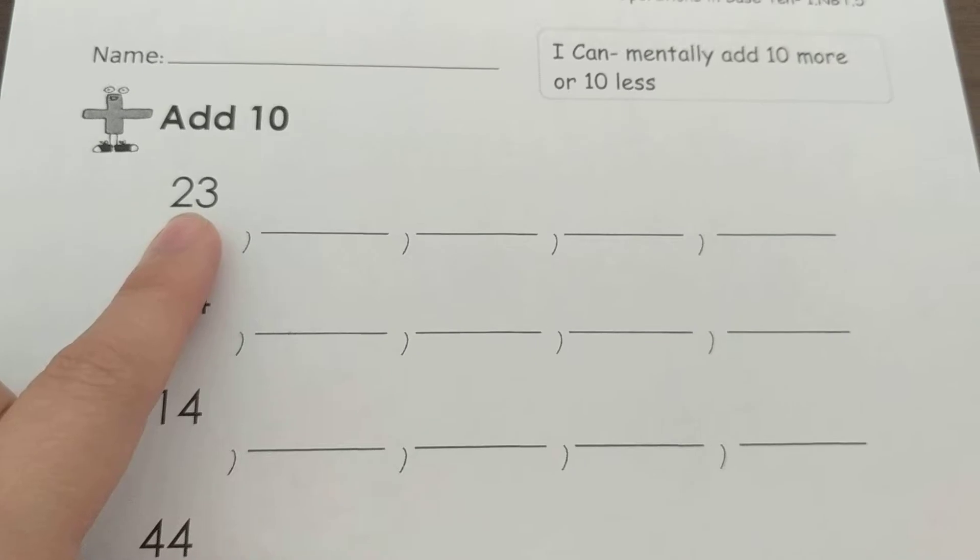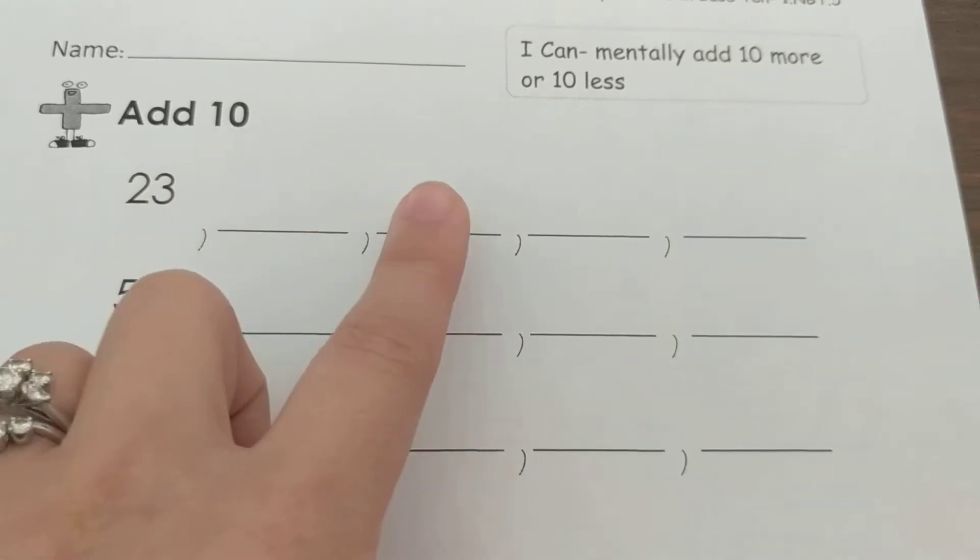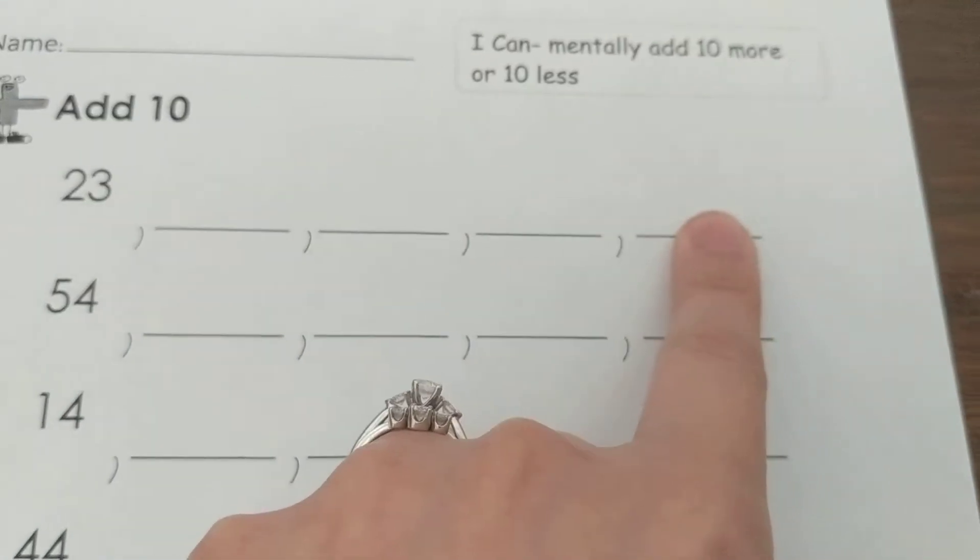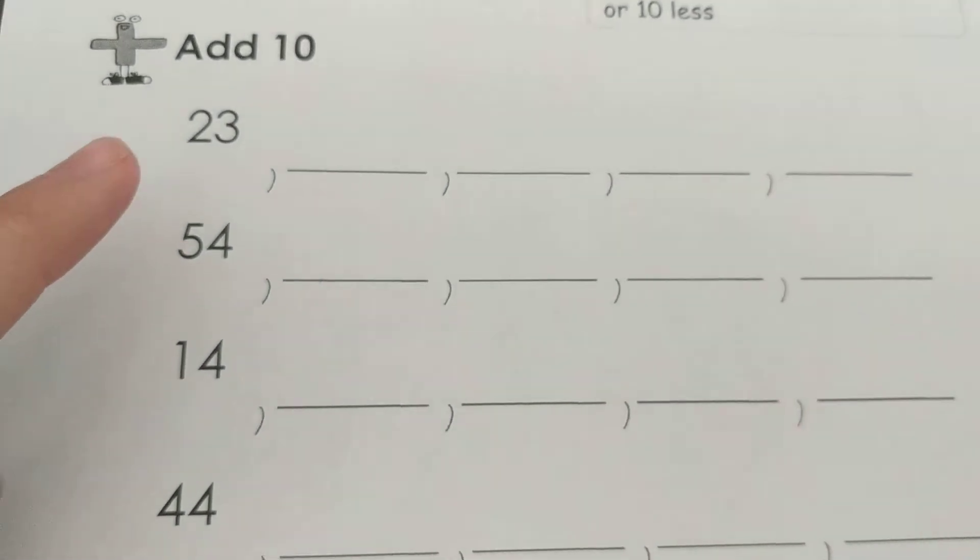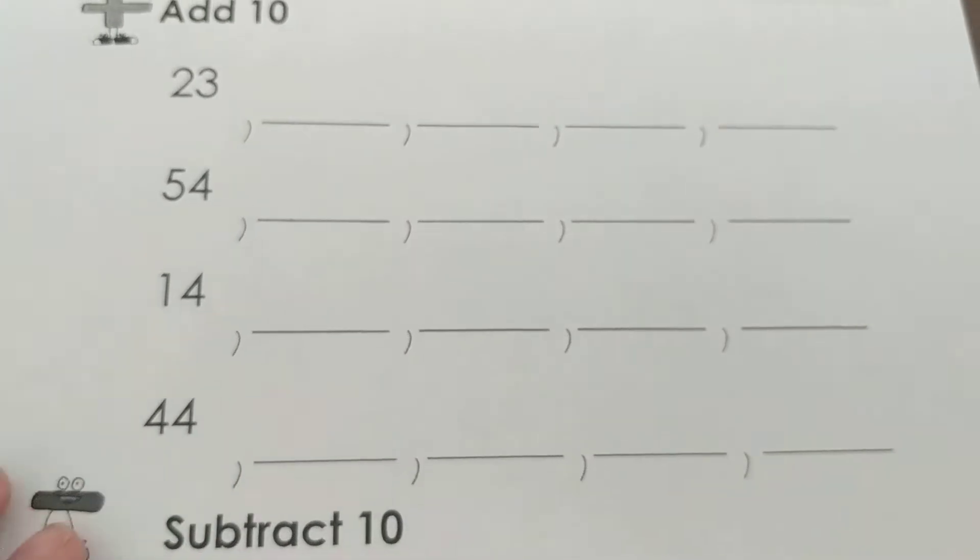I know 23 plus 10 is 33, then 43, then 53, then 63. So I'm just counting by 10s as I'm going. Then you're going to go ahead and do 54, 14, and 44.